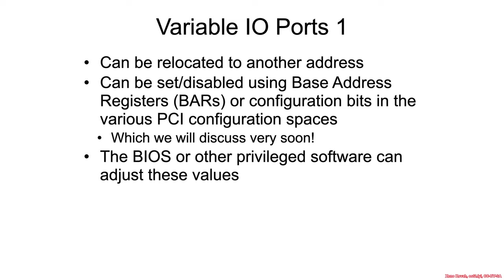In contrast to fixed IO ports, variable IO ports can be moved around the IO address space to any particular port number that is not in use. There are some types of variable port ranges built into Intel hardware, required by certain specifications. But there's also the entire class of variable IO ports used by PCIe devices.